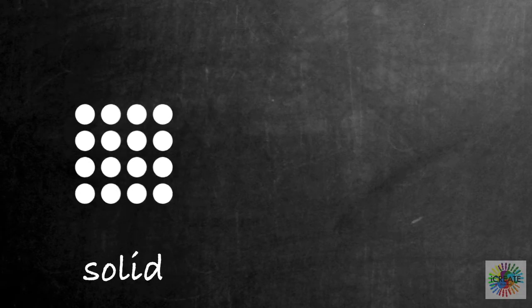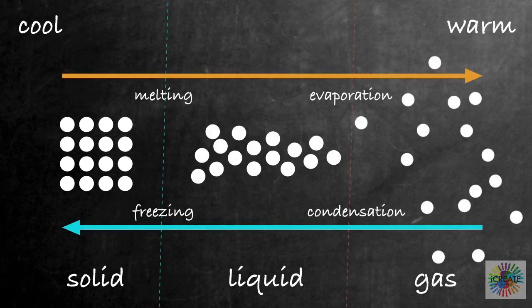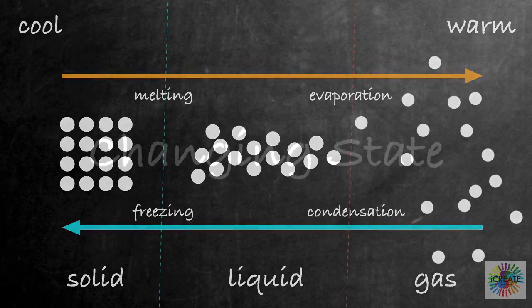So we can change an object from a solid to a liquid to a gas and back again, changing the state of the object each time.